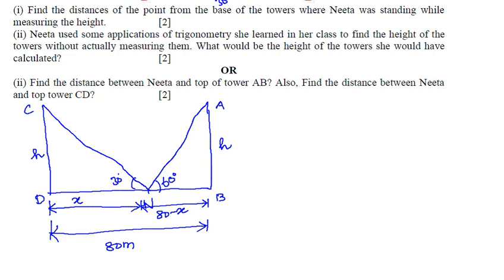We can solve step by step. First, we can use tan θ. Tan θ equals opposite by adjacent. Tan 60° equals h by (80 - x). Tan 60° equals √3.